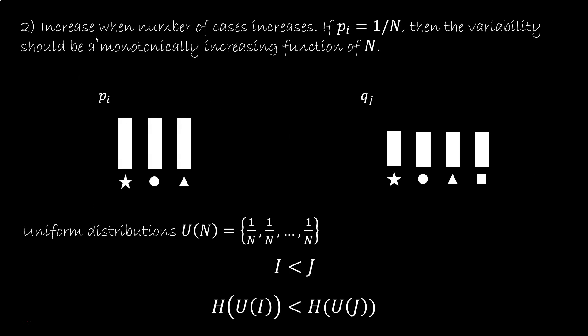Second, if the number of cases increases, we want the indicator to increase. More precisely, if we have a uniform distribution over n cases, we want the variability to increase as n increases, to be a monotonically increasing function of n. If we say u is a uniform distribution, then the variability h of a uniform distribution over i cases should be less than the variability of a uniform distribution over j cases if i is less than j.